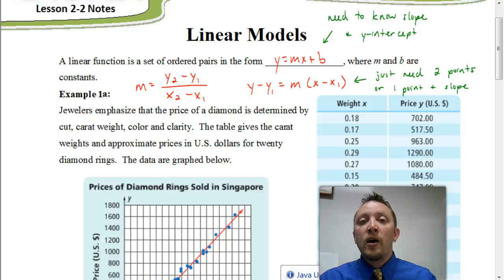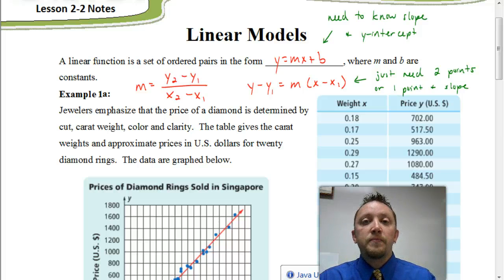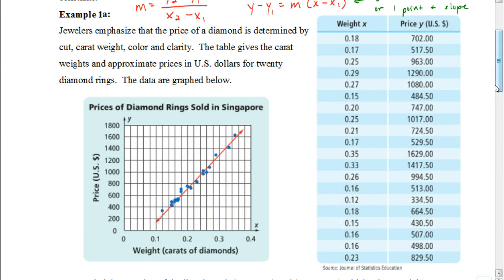We're going to look at an example and use data from a table to create an equation. This example looks at jewelers — the carat weight for diamonds and the price for those diamonds. The table gives carat weights and approximate prices in US dollars for 20 diamond rings, and the data are graphed in a scatter plot. The red line represents the line of best fit, and we're going to come up with an equation for a line that fits this data.